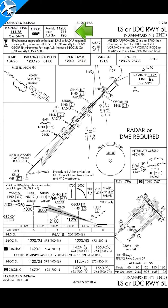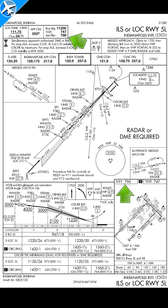Touchdown zone elevation refers to the highest elevation of the runway in the first 3,000 feet. Airport elevation is the highest elevation of all the usable runways.